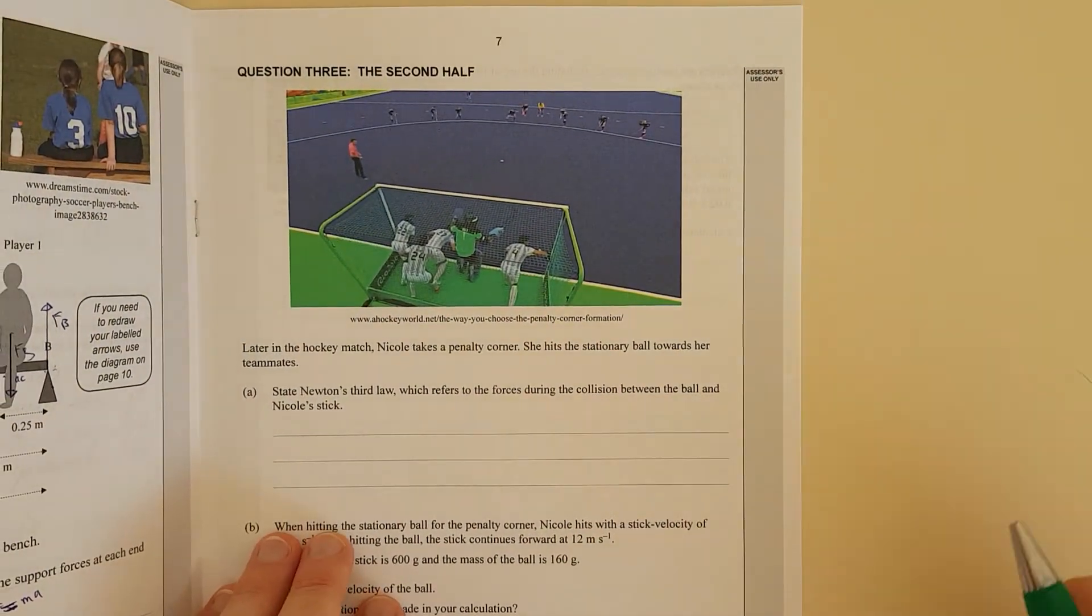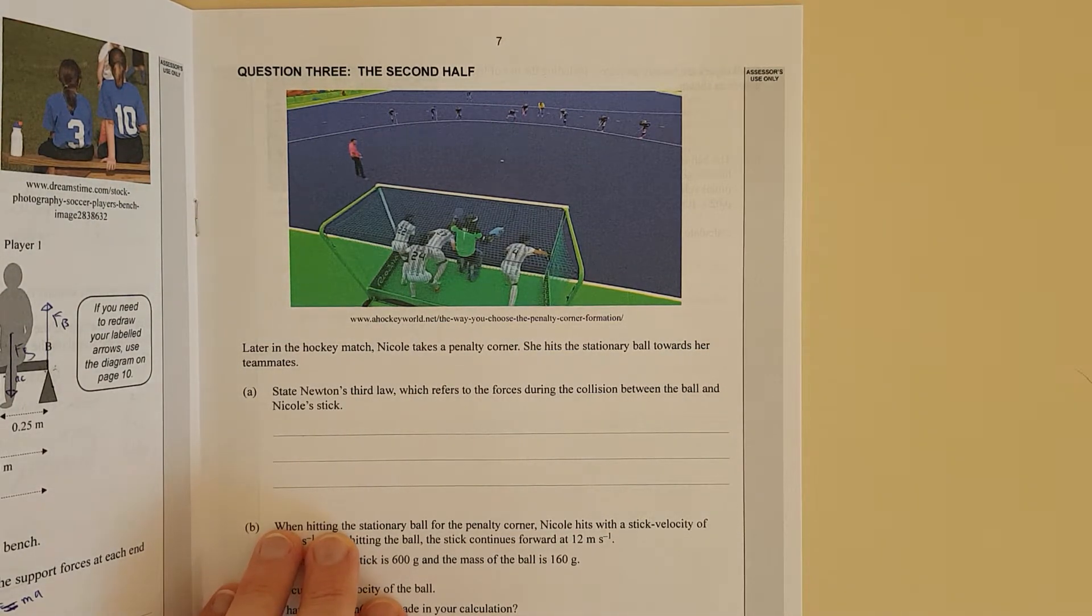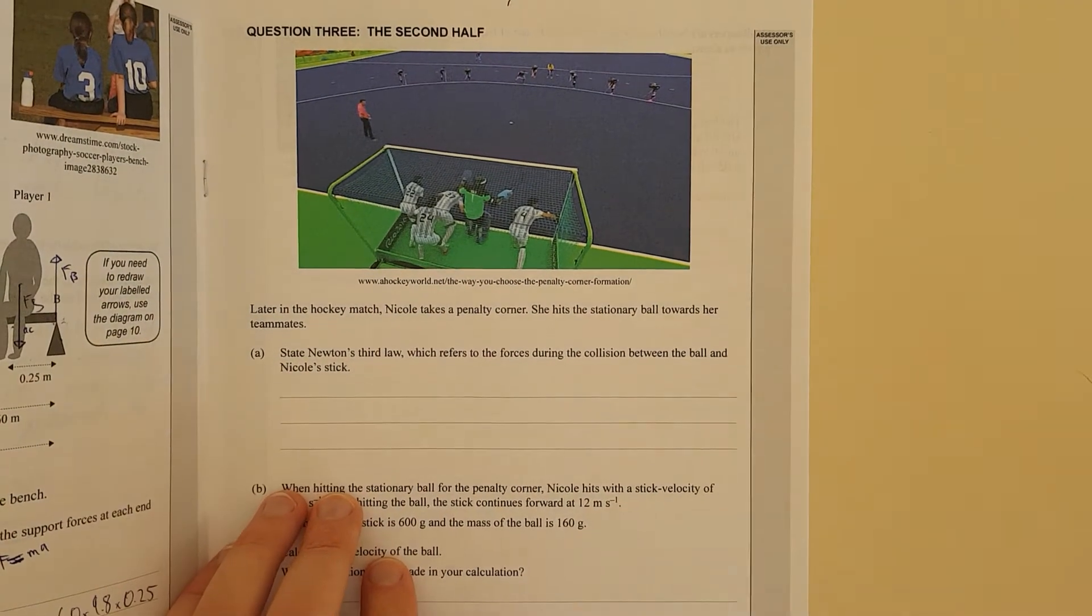Right, later in the hockey match, Nicole takes a penalty corner. She hits the stationary ball towards her teammates. State Newton's third law which refers to the forces during the collision between the ball and Nicole's stick. So I'll just pause, write the answer and discuss.